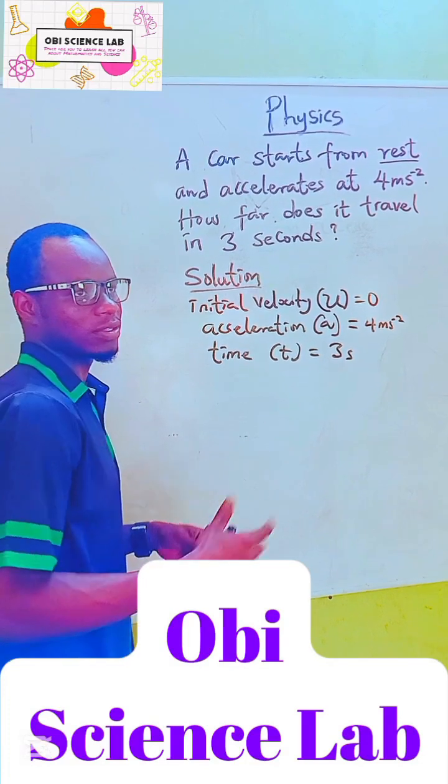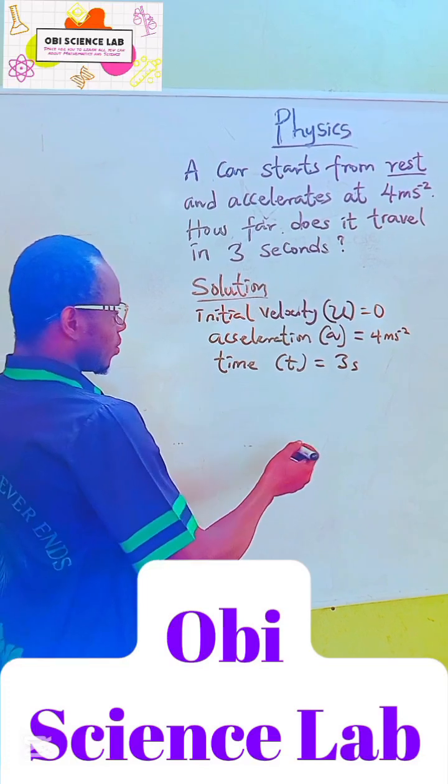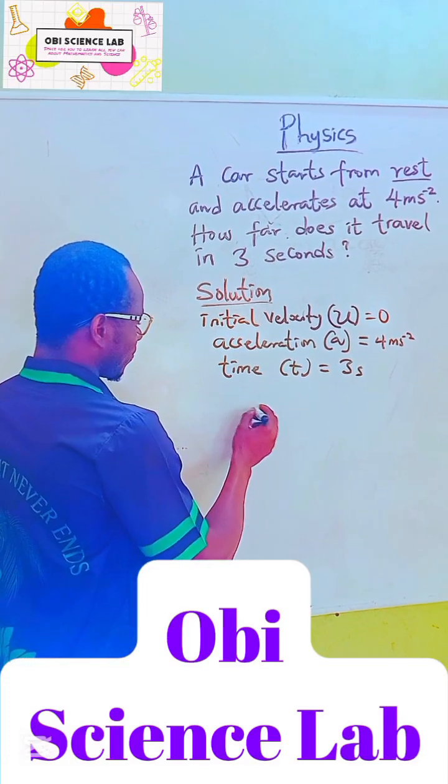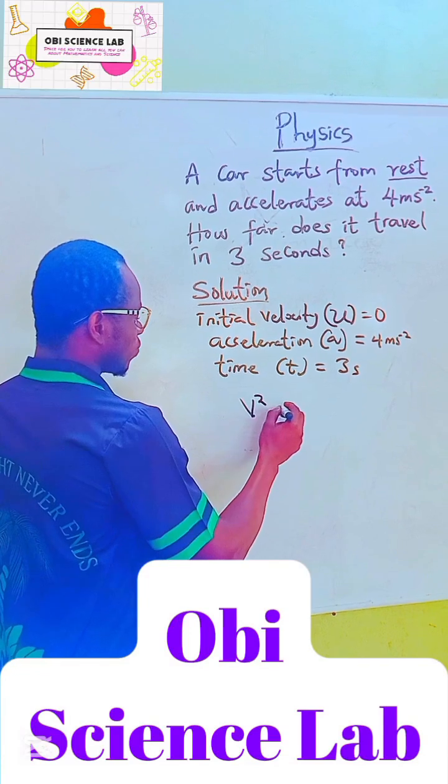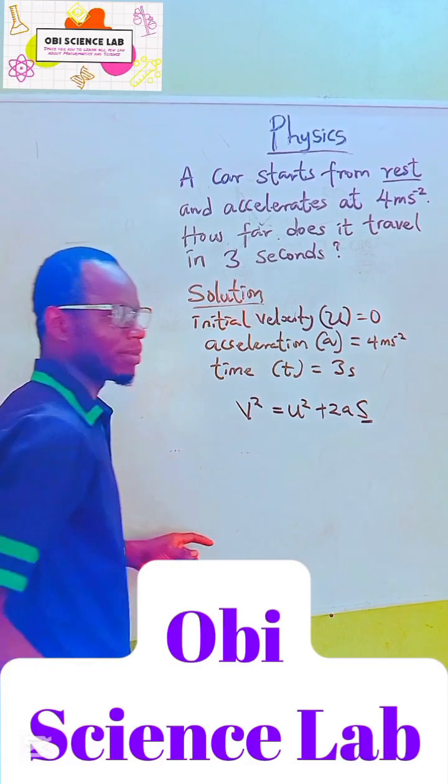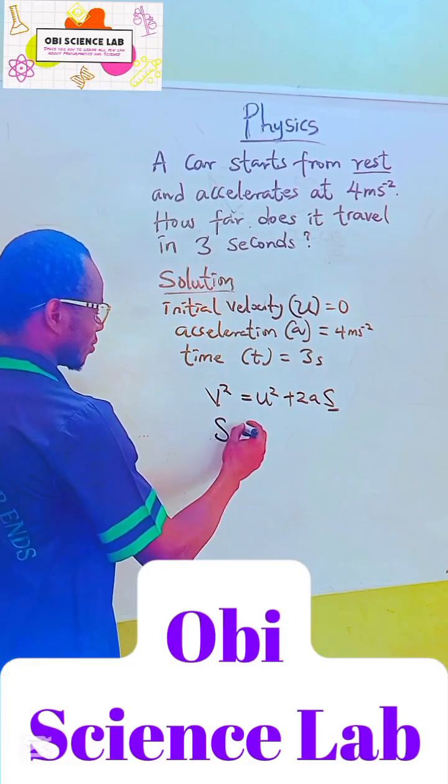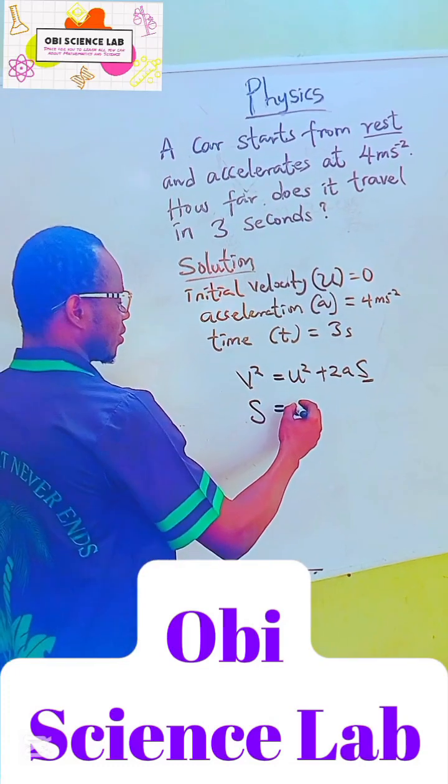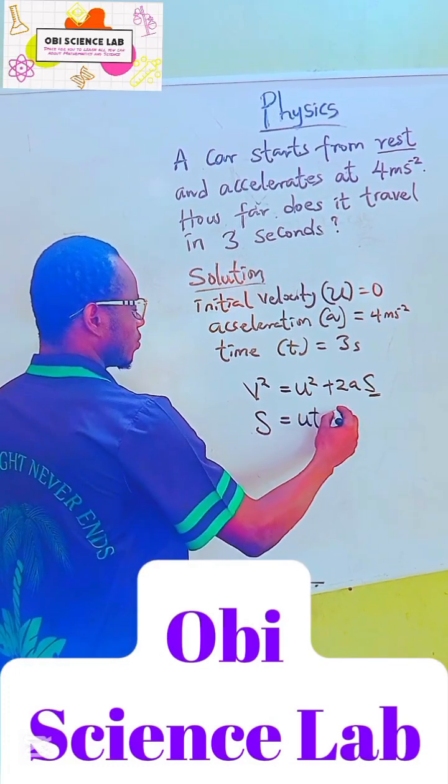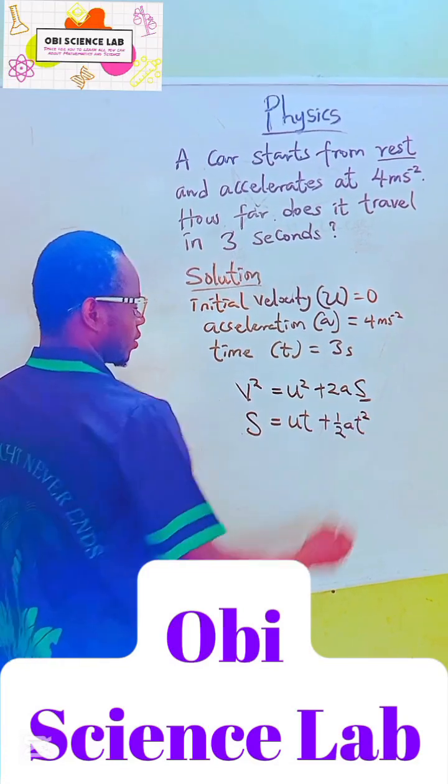And in the three equations of motion under uniform acceleration, we have that v squared is equal to u squared plus 2as. This s is talking about displacement distance. And we also have that distance, or displacement, is equal to ut plus half at squared.